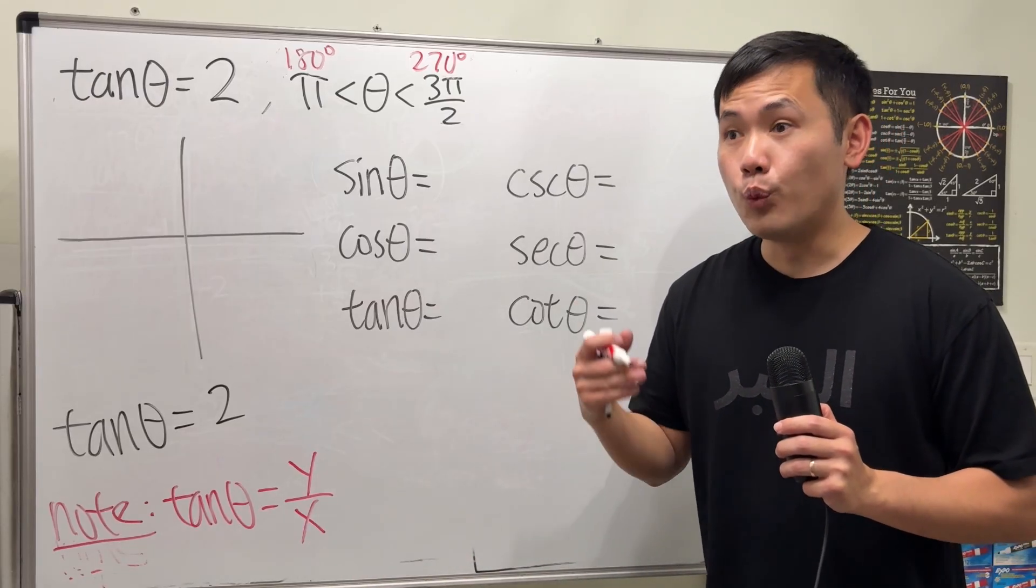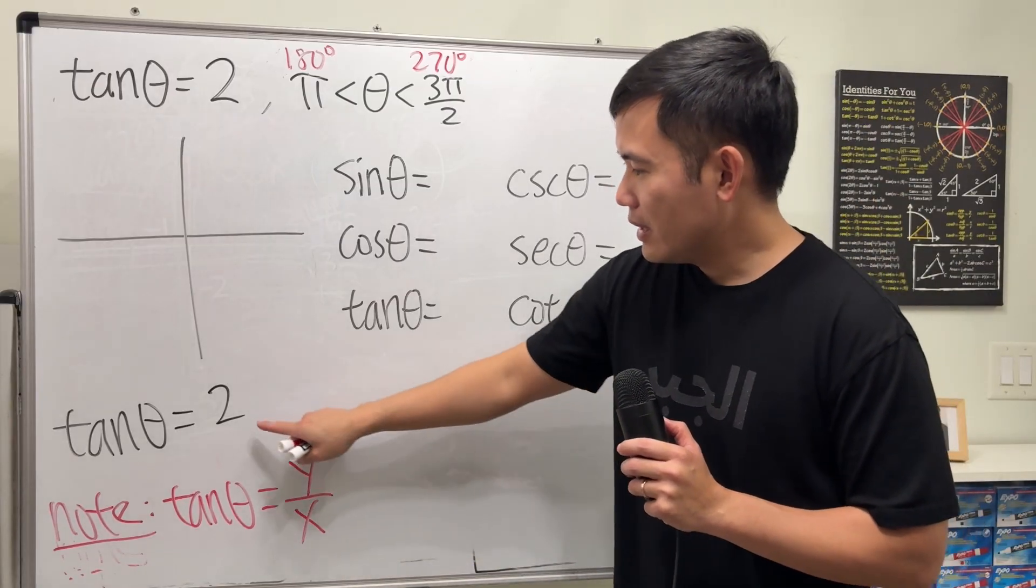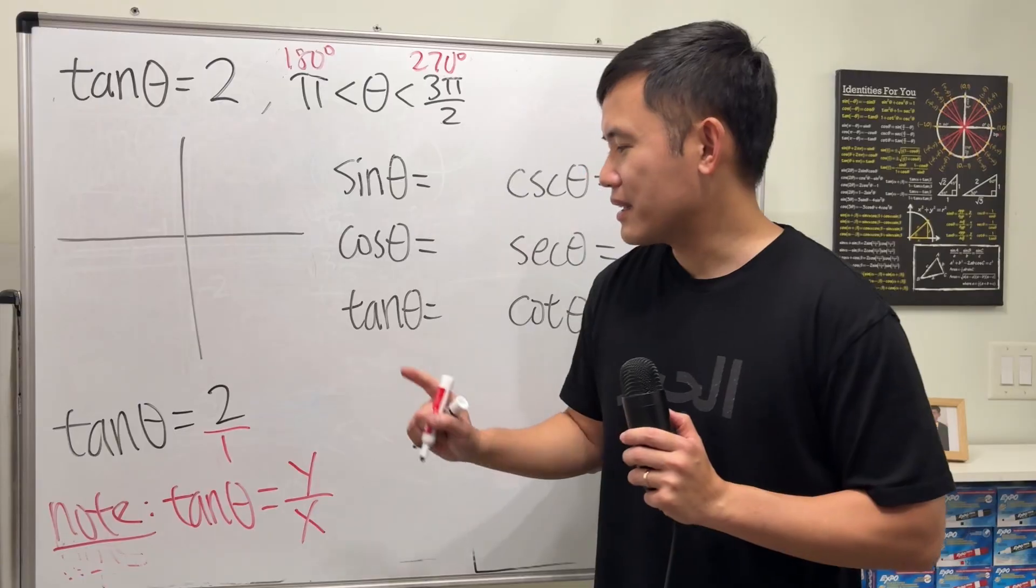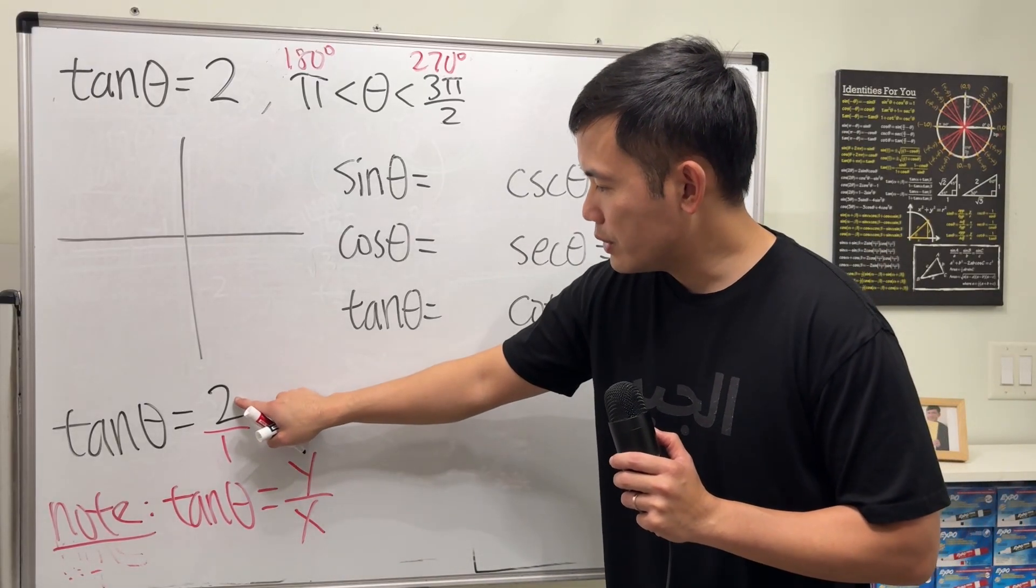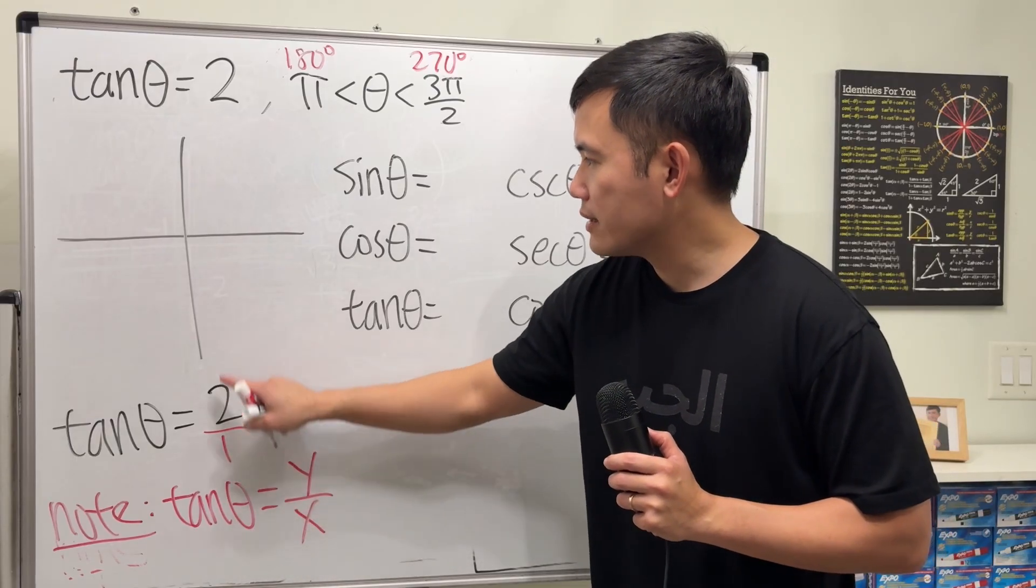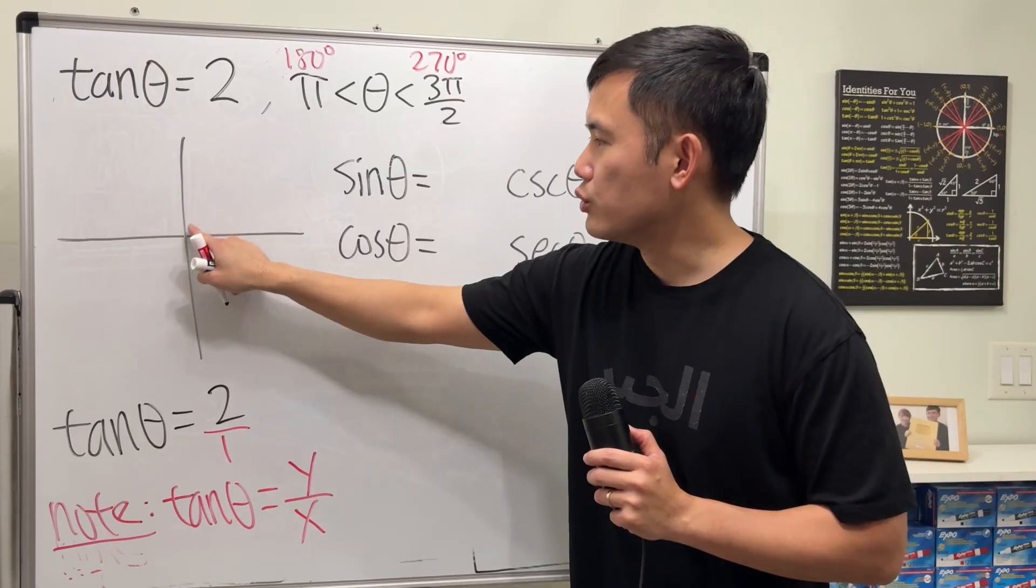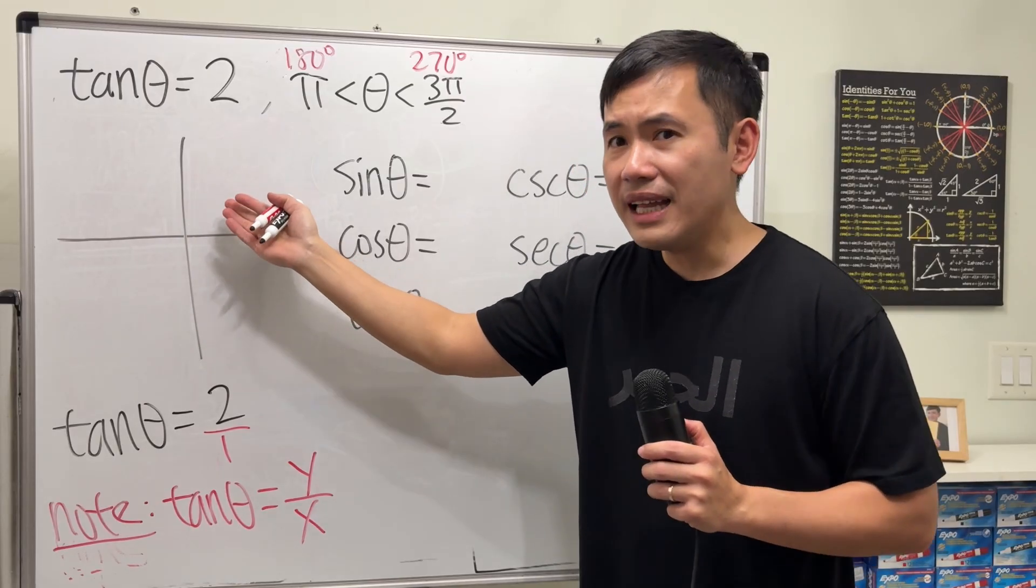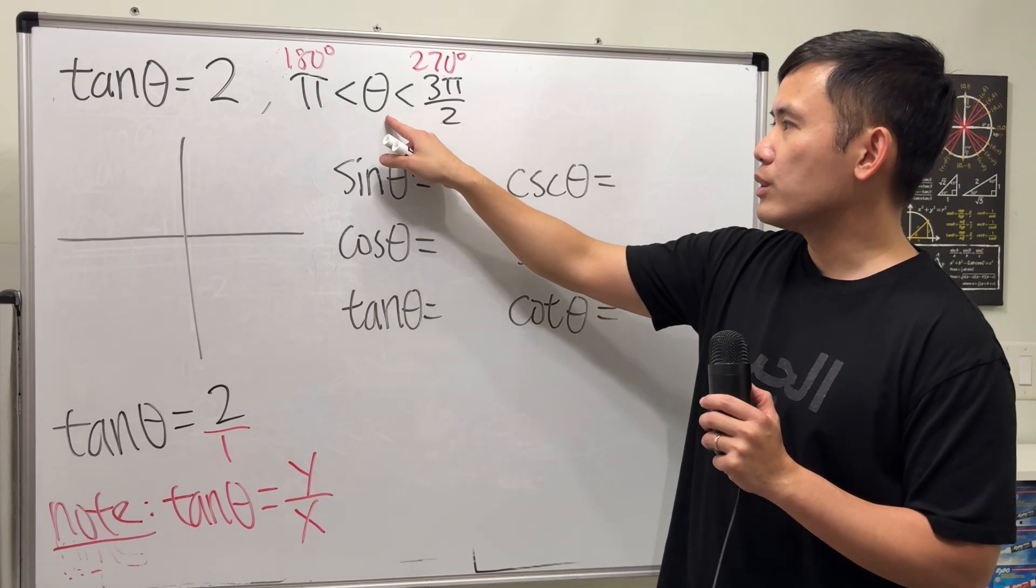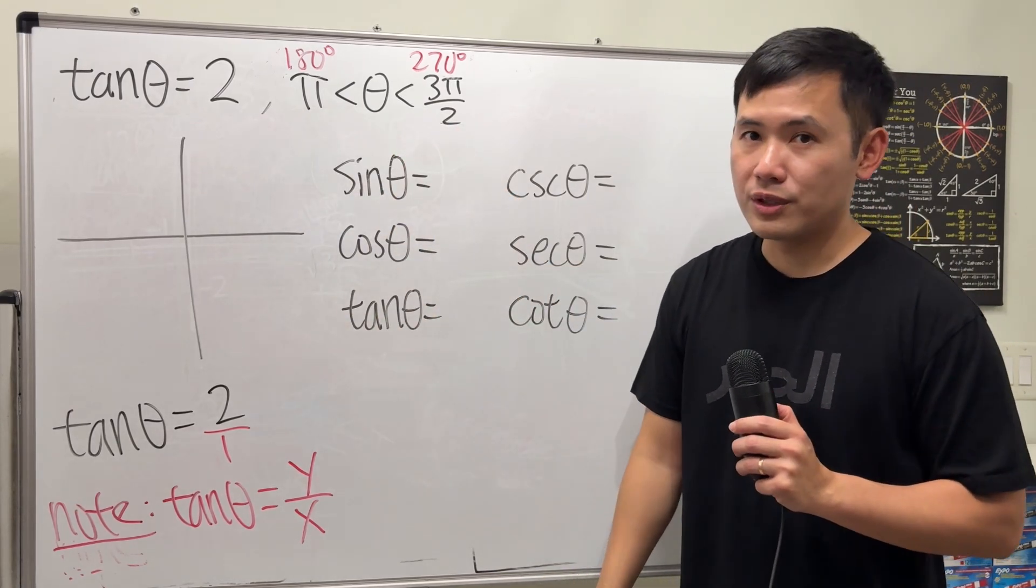If you look at 2, you can put the 2 as 2 over 1. But here's the problem: if you say 2 is the y and 1 is the x, well 1 comma 2 would give you a point and you'd draw a reference triangle that is going to be in the first quadrant. That's not correct because the angle theta has to be in the third quadrant.